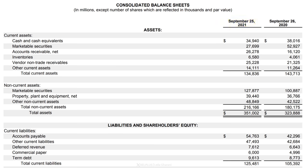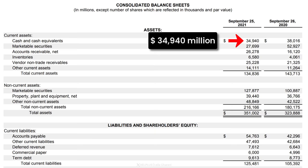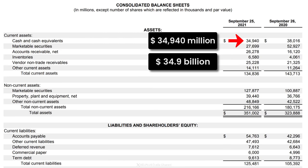To be able to make better sense of the numbers, we also get a comparison period — in this case, September 26th, 2020. Another important thing is the note up here that the numbers are stated in millions. So that number here is not $34,940, but $34,940 million, or $34.9 billion.